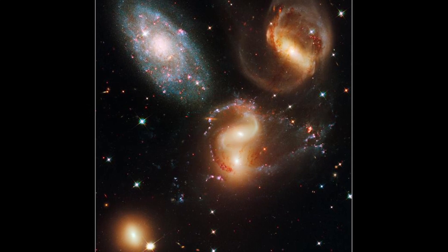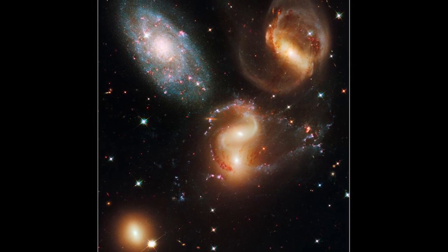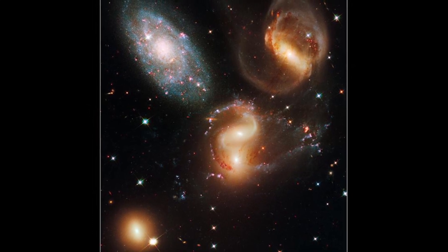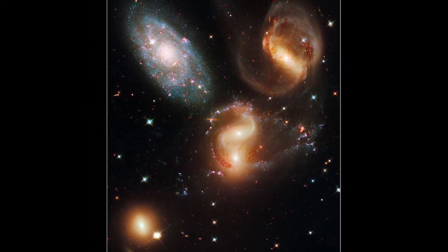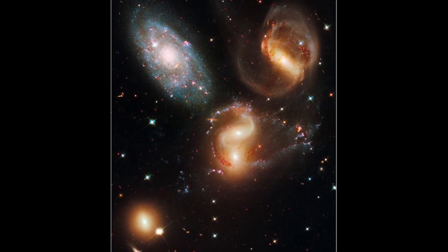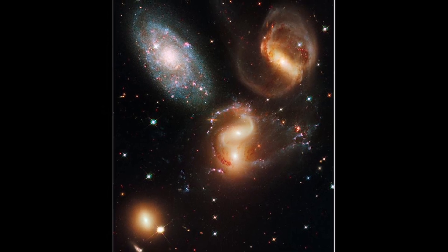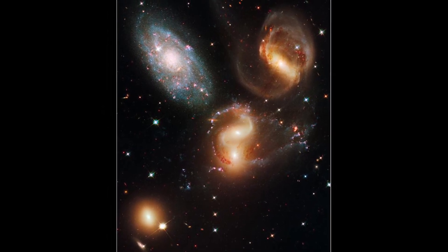And finally, we will view Stephan's Quintet, which is about 290 million light-years away. It is notable for being the first compact galaxy group ever discovered, in 1877. Ninety-eight years ago, we thought we were the only galaxy in the universe. Now we know that there are over 200 billion galaxies in the observable universe.